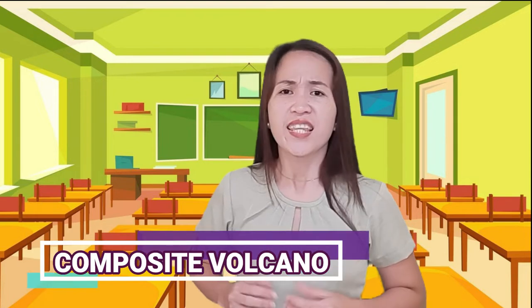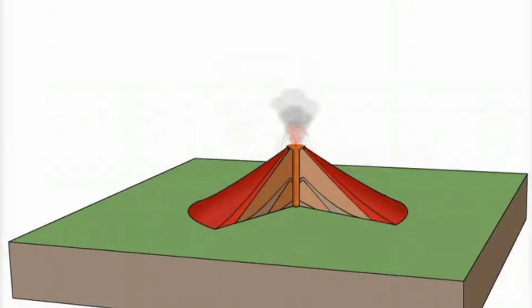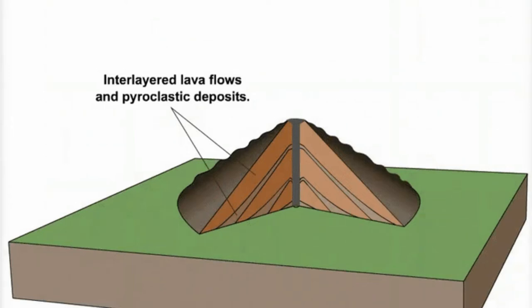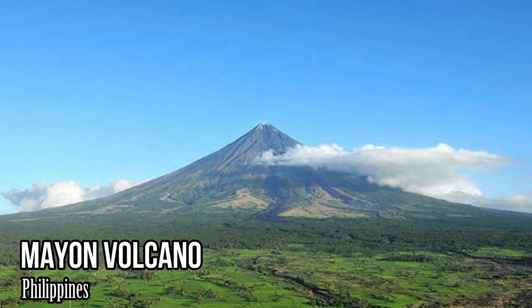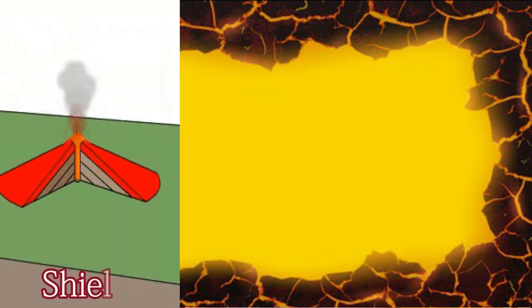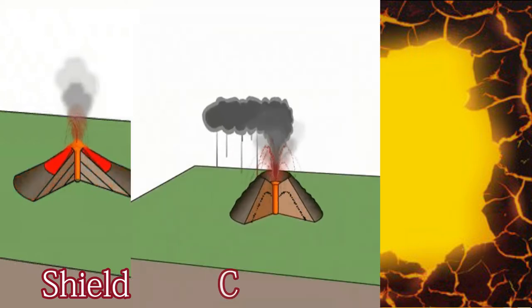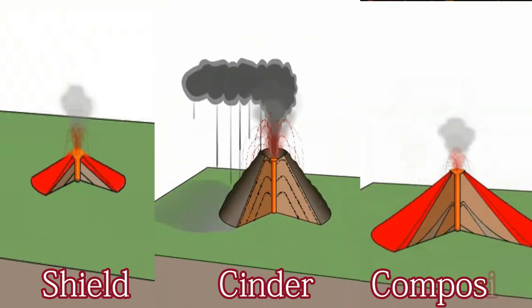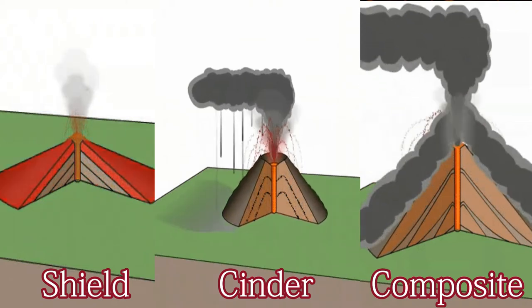Lastly, we have the composite volcano, also known as a stratovolcano. This is a large, nearly perfect slope structure formed by the alternate solidification of both lava and pyroclastic deposits. According to volcanologists, some of the Earth's grandest mountains are composite or stratovolcanoes. One good example is our very own Mayon Volcano. So the three types of volcano according to landform or shape are: Shield Volcano — broad and resembling a warrior's shield; Cinder Cone Volcano — also known as scoria cone, with a wide crater; and Composite Volcano — also known as stratovolcano, with a nearly perfect slope structure.